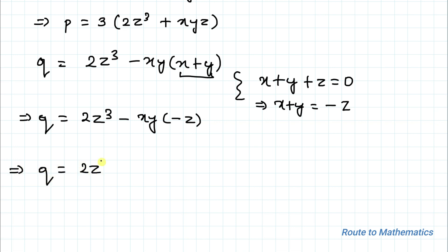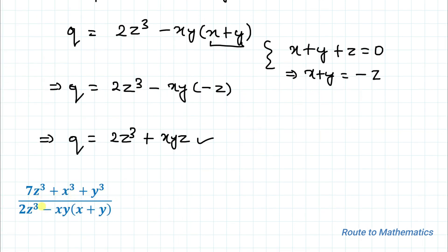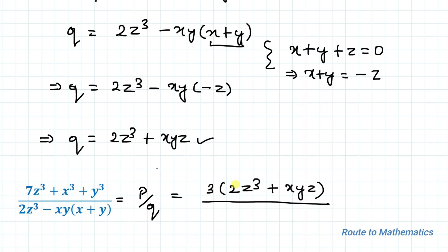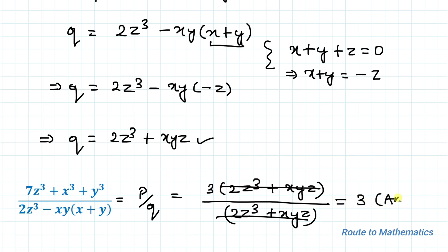Now we have P and Q. The expression (7z³ + x³ + y³) / (2z³ − xy(x + y)) equals P/Q. Substituting, we get 3(2z³ + xyz) divided by (2z³ + xyz). Cancelling the numerator and denominator, we get 3 as our answer. I hope you understood the solution. Thanks for watching — please subscribe to my channel and click the bell icon for more such interesting videos.